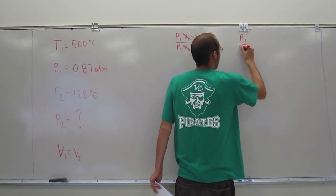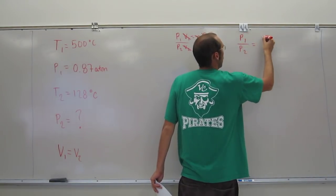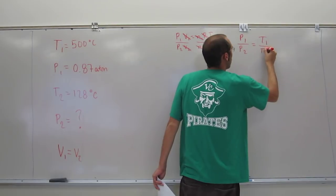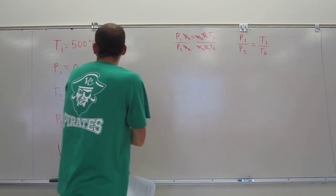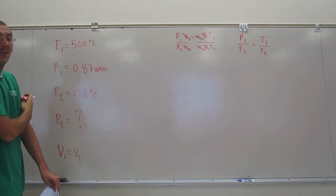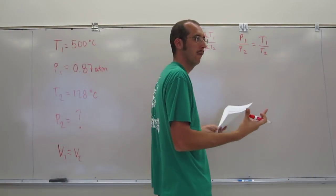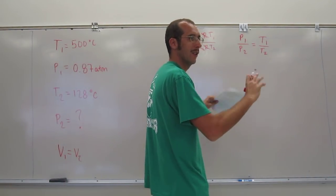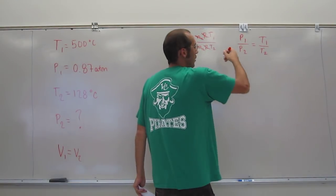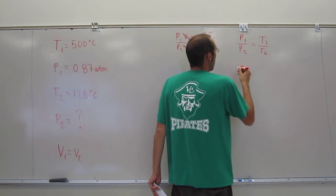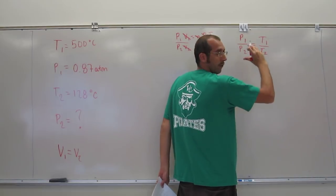P1 divided by T1 equals P2 divided by T2. Very good. And what are we looking for? P2. So we want to isolate that variable. We could do it a number of ways. The way I like to do it is just flip it over, and then just multiply both sides by P1.